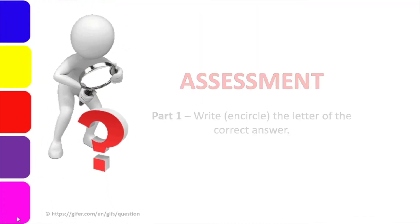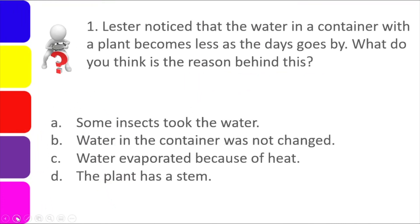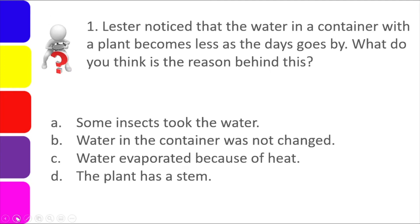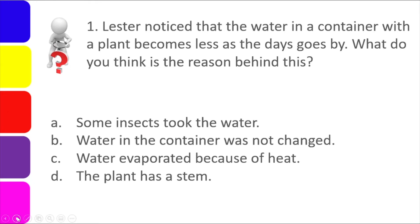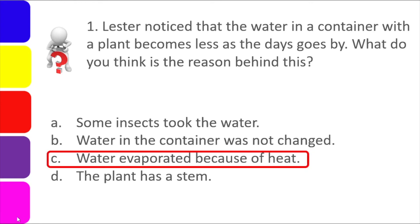Now let's do the assessment from your module. For question 1: Lester noticed that the water in a container with a plant becomes less as days go by. What is the reason? A. Some insects took the water. B. Water in the container was not changed. C. Water evaporated because of heat. D. The plant has a stem. The answer is letter C — water evaporated because of heat. Even without boiling, if left in a warm place, water will naturally evaporate little by little.